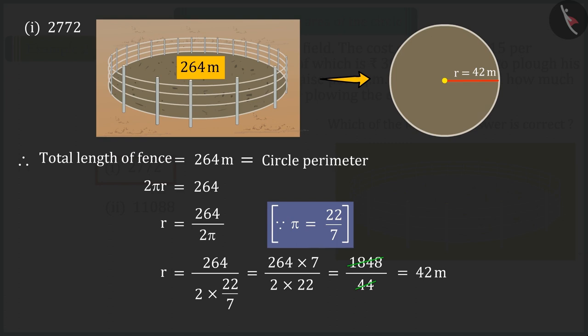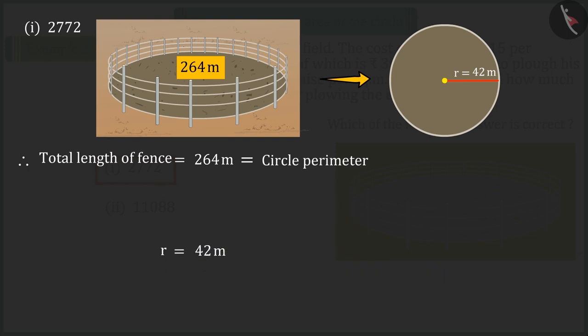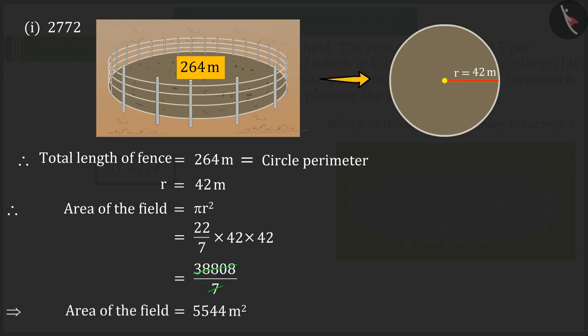Which, when solved, gives the value of radius that is 42 meters. Since we have to find the total expenditure in plowing the field, for which we will need the area of the field. Solving the value of R in the formula for the area of the circle. The area of the circle, that is, the area of the field is 5544 square meters.